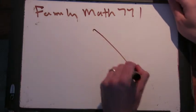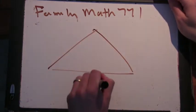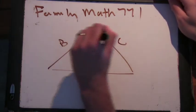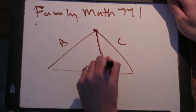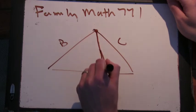Stewart's Theorem says when you have any triangle, I'll call this side A, this side B, this side C, and you have any line coming down from a vertex to the opposite side. It's supposed to be a straight line there.